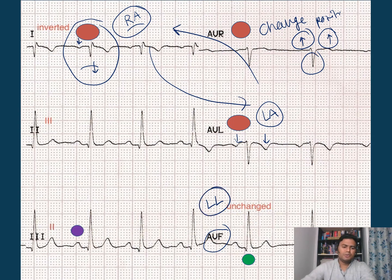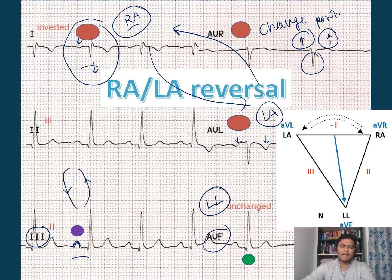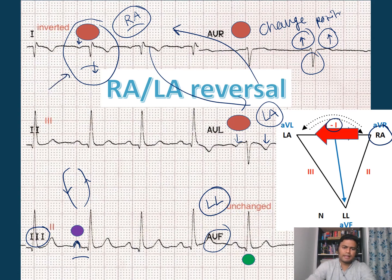Lead II appears to have a normal position, and lead III has a large P. This means leads II and III have kind of exchanged their normal signs, because RA is now sitting towards the left. That is why lead I becomes inverted, and leads II and III exchange their positions. This confirms an RA to LA lead reversal.